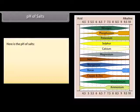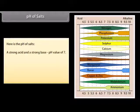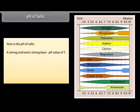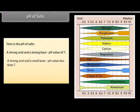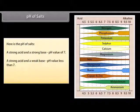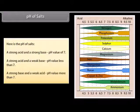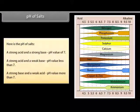The pH of salts depends on the strengths of the acid and base that formed them. A strong acid and a strong base produce a salt with a pH value of 7. A strong acid and a weak base produce a salt with a pH value less than 7. A strong base and a weak acid produce a salt with a pH value greater than 7.